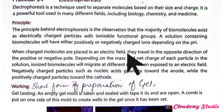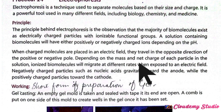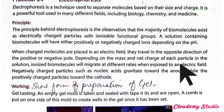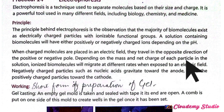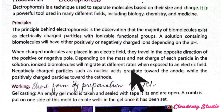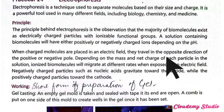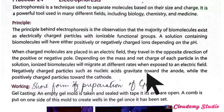When charged molecules are placed in an electric field, they travel in the direction of the oppositely charged pole, depending on the mass and net charge of each particle. Ionized biomolecules will migrate at different rates when exposed to an electric field — you have seen in the video how positive particles move towards the negative pole and negative particles towards the positive. Negatively charged particles such as nucleic acids gravitate towards the anode, just like DNA, while positively charged particles move towards the cathode.